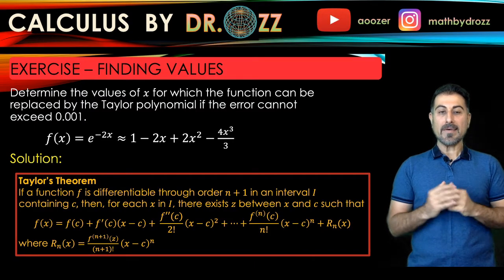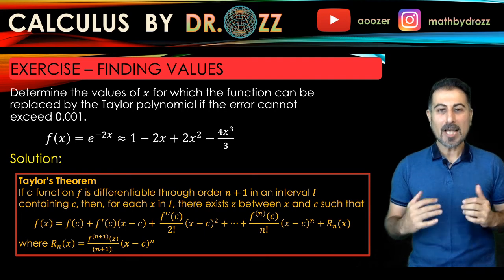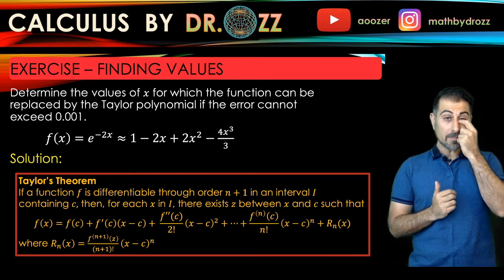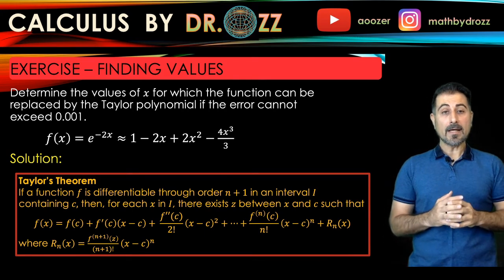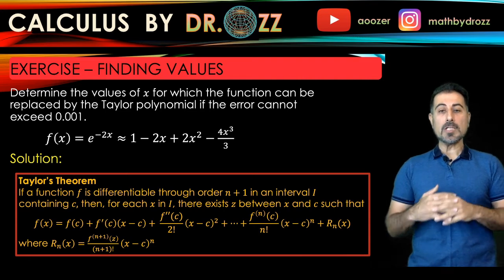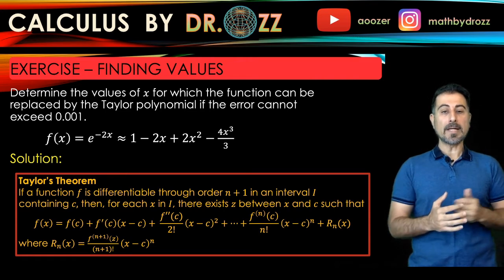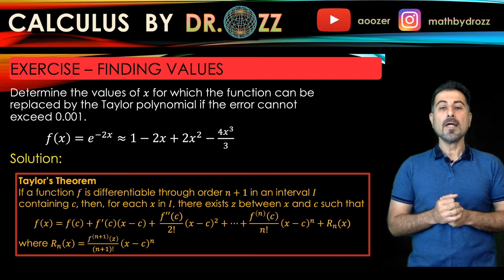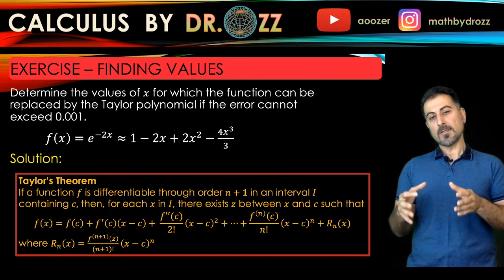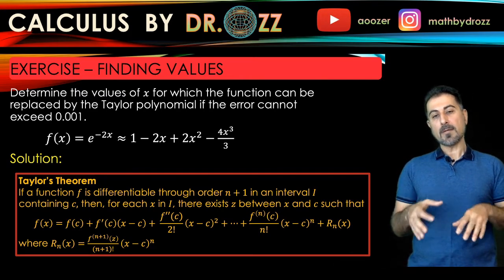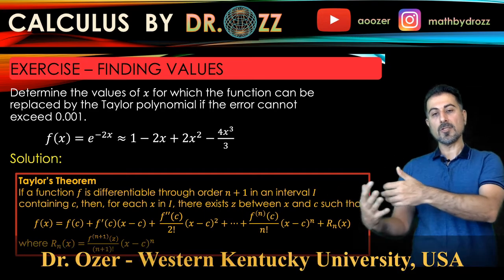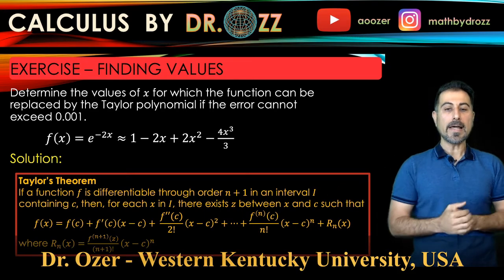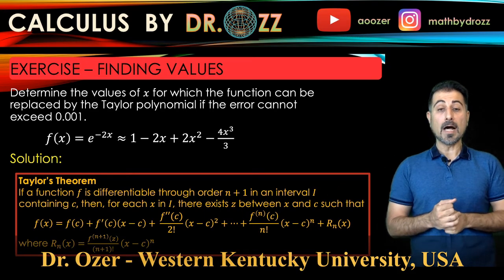Today we are going to have another application of Taylor's theorem. Taylor's theorem is used to approximate functions by using their Taylor or Maclaurin polynomials, and we have a specific description of the error that we made by replacing the function with its nth Taylor or Maclaurin polynomial.